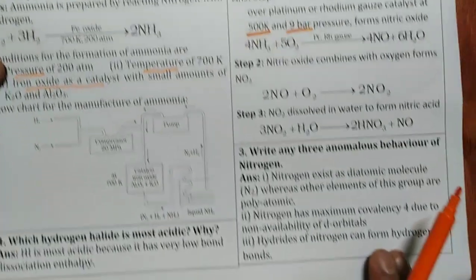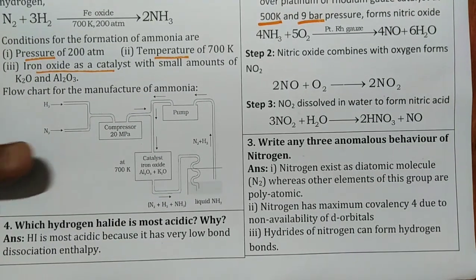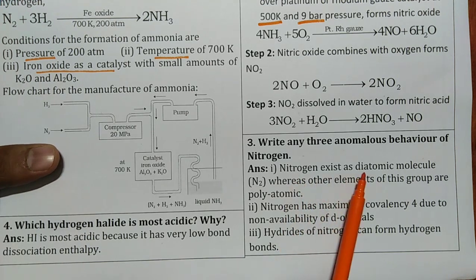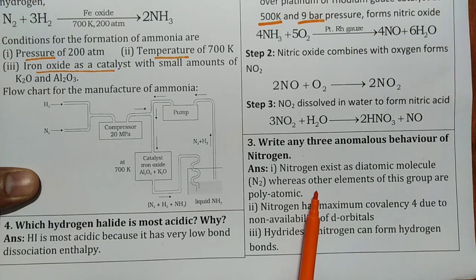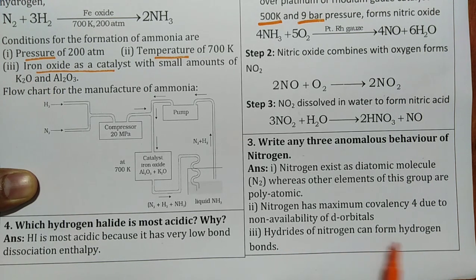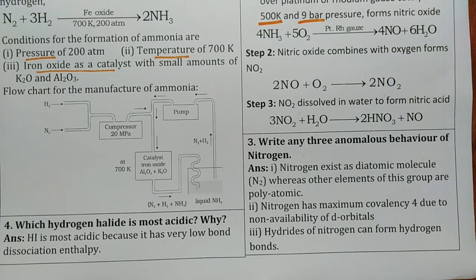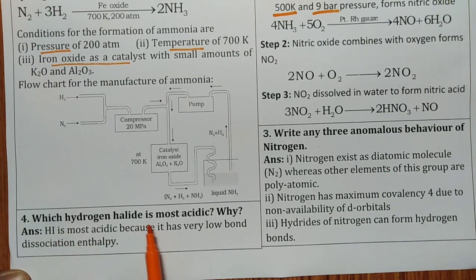Then write three anomalous behavior of nitrogen. Very simple. Only three properties. Nitrogen exists as diatomic molecule whereas other elements of this group are polyatomic. Second point: Nitrogen has maximum covalency 4 due to non-availability of d orbital. Third one: Hydrides of nitrogen can form hydrogen bonds. Very simple. These are the three properties practice.